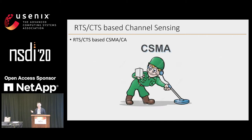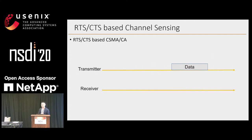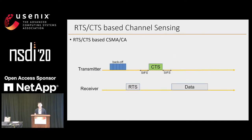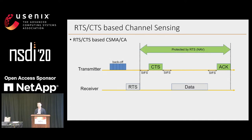In order to avoid the collision, RTS/CTS-based channel sensing has been widely used in current Wi-Fi. Basically, if there is data, the transmitter, after random backoff, first sends the RTS to the receiver, and the receiver responds with a CTS. Then the data is allowed to transmit, and finally the receiver feeds back an ACK. This period is protected by RTS, called NAV, and we can guarantee there is no collision in this field.